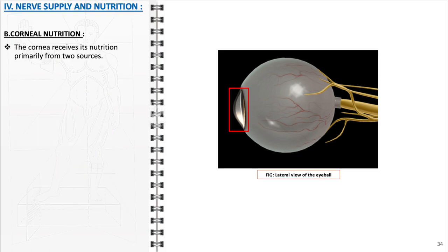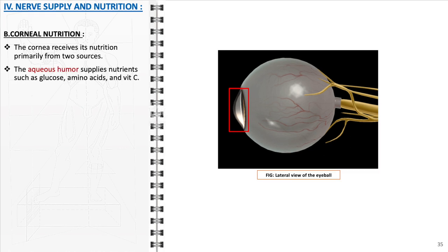Concerning the nutritional supply, the cornea receives its nutrition primarily from two sources. The aqueous humor, a clear fluid in the anterior chamber of the eye, supplies nutrients such as glucose, amino acids, and vitamin C, and also helps remove metabolic waste products.